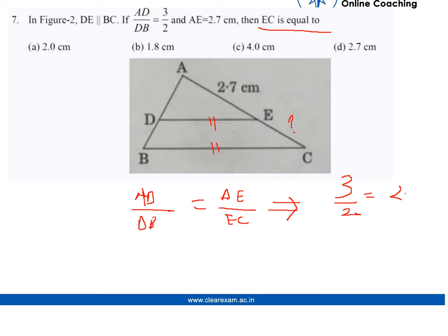We're given that AE is 2.7, so let's take EC as X. This gives us 3/2 equals 2.7/X.